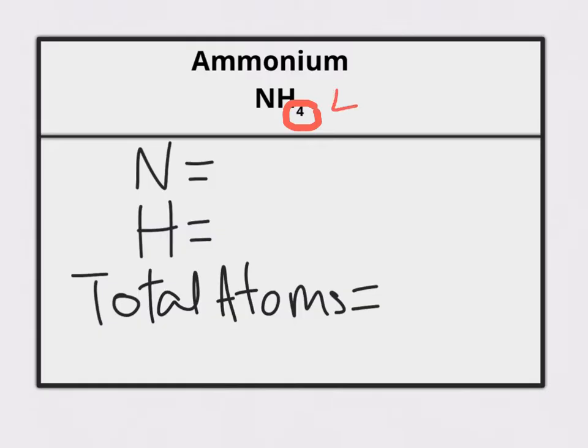In this case, there's going to be 4 hydrogen atoms. The N does not have a subscript, so we're going to pretend that there's an invisible 1 next to the N.